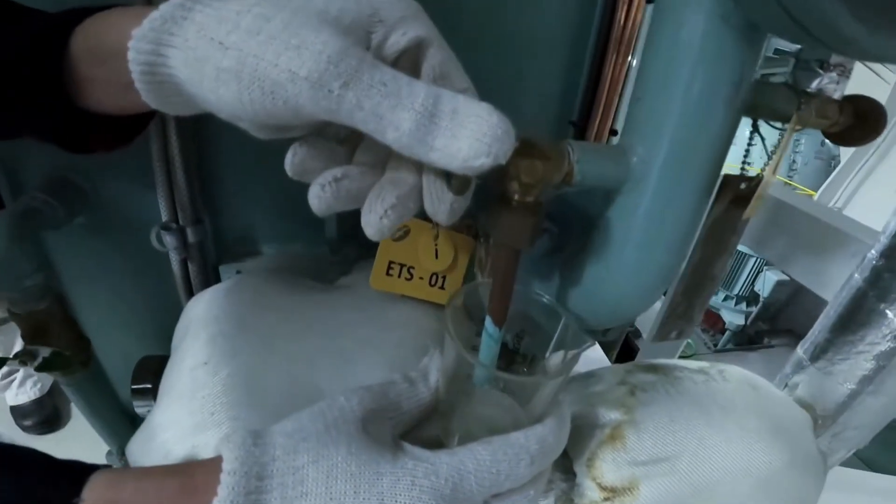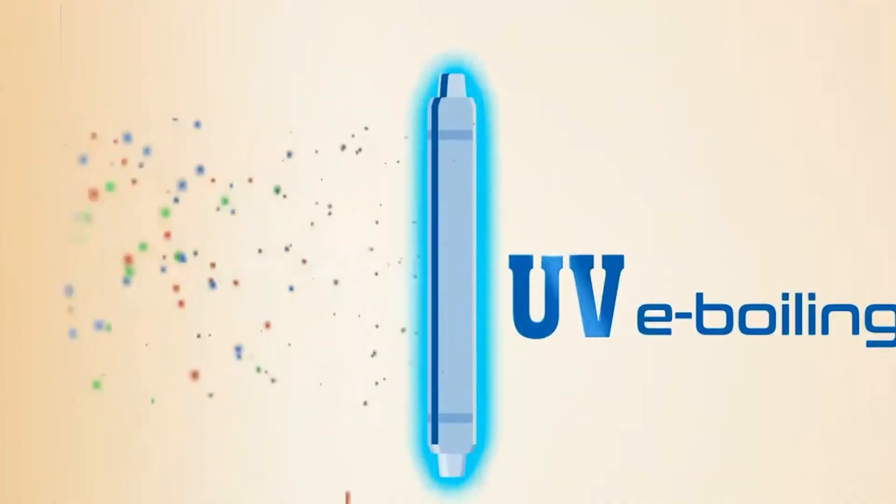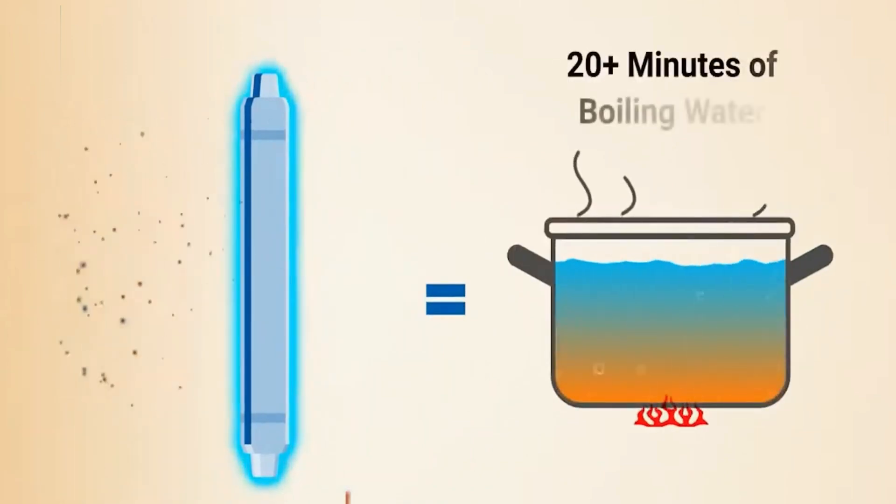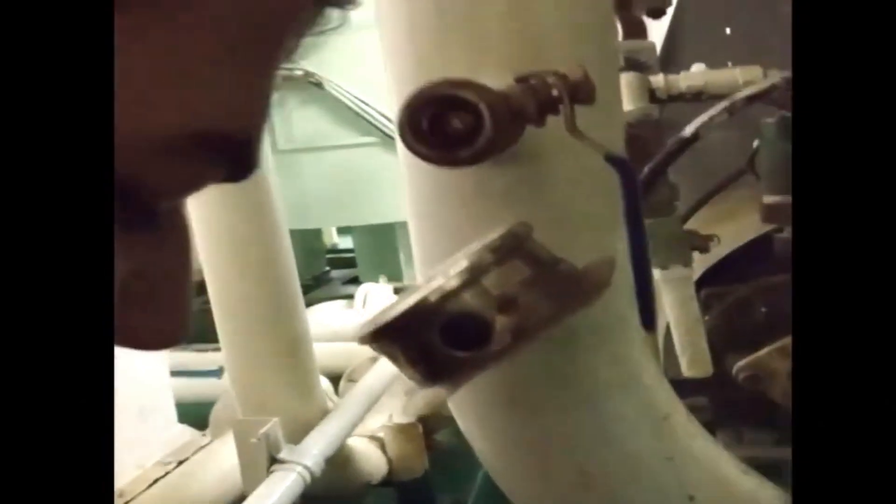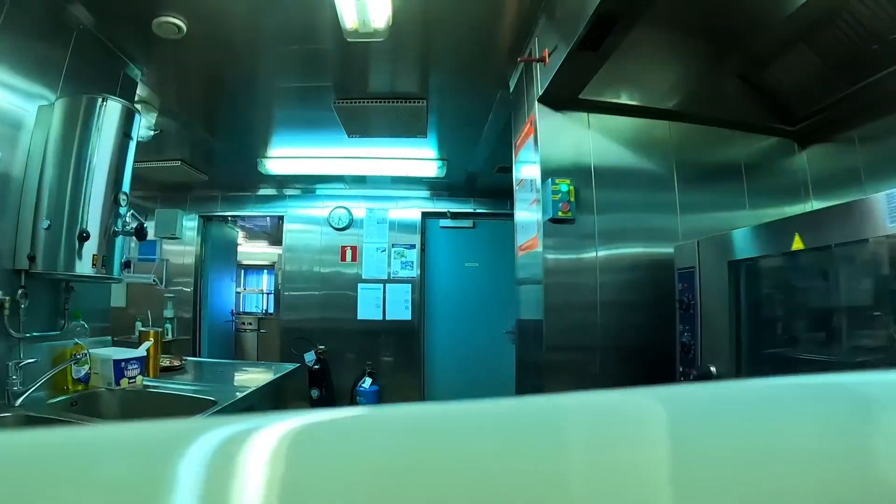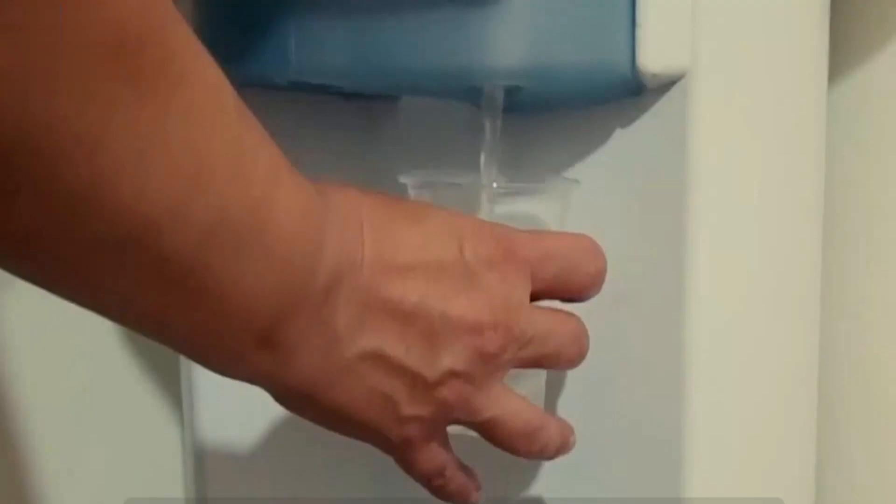It may also undergo UV treatment or chlorination to ensure any lingering bacteria or viruses are killed, providing an added layer of safety. Once it meets strict regulatory standards, this water is stored in special tanks ready to be distributed for drinking or cooking.